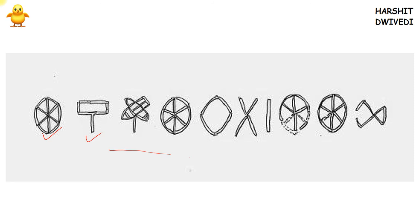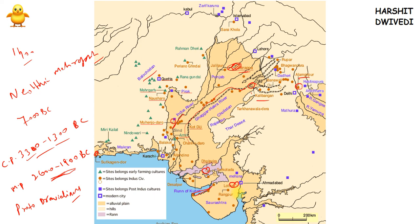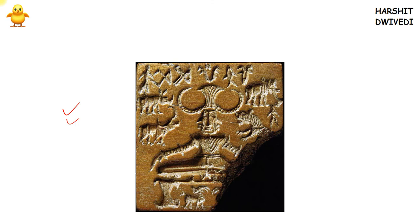There are three important port towns of the Indus Valley civilization: Lothal, Sutkagendor, and Balakot. Sutkagendor is currently around 55 kilometers from the sea due to coastal upliftment; Balakot remains on the sea today; and Lothal, previously near the sea, has shifted inland due to coastal erosion.